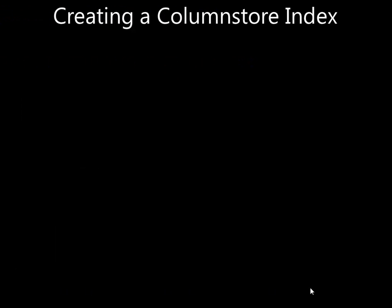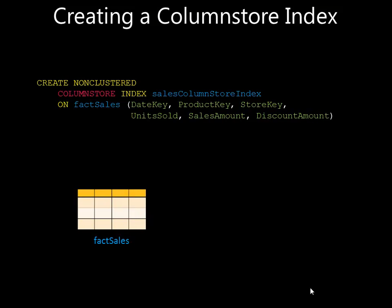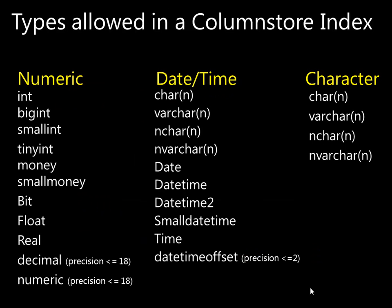To create a column store index against a table, we use the same CREATE INDEX statement that we're used to, with a modifier. So here we have the word column store — we're creating an index that's a column store index on the table with a list of columns. When we execute this statement, the database will pull the specified columns for all the rows in the table, compress that into a column store index, and put it back on disk. There are some supported column types that we can include in that CREATE COLUMN STORE INDEX statement.